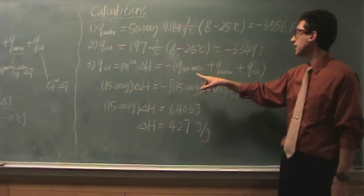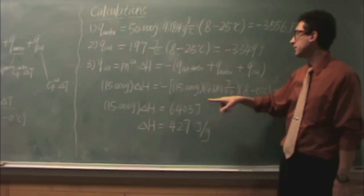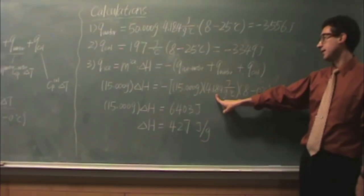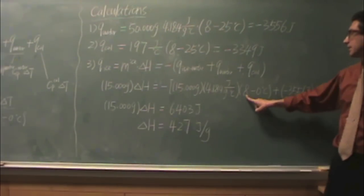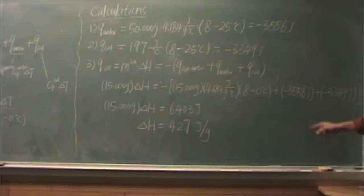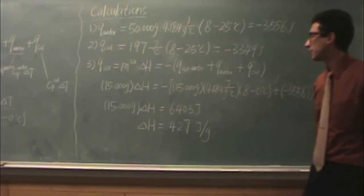And then, the Q of the ice water. That's the mass, 15, the Csp, and then 8, remember, minus 0. For Q of the water, we just found that. That's the negative 3556. And for Q of the calorimeter, we just found that. That's the negative 3349. You add all those up. You get 6403.